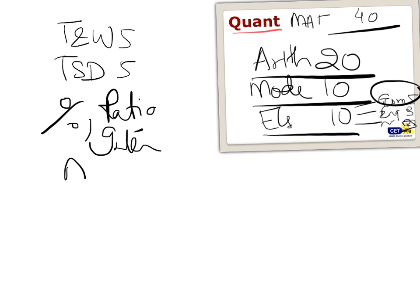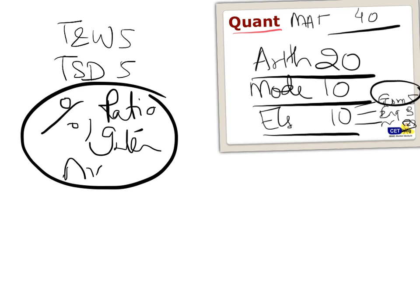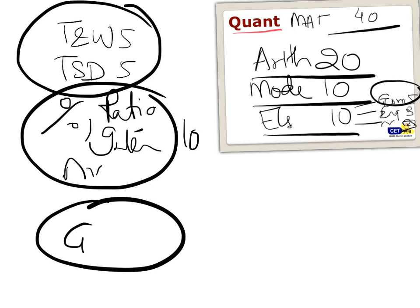Averages, mixtures - again 5-10 questions. Time and work, time speed distance you have to do, you have no other option. Then followed by percentages, ratios, interest, mixtures, allegations, averages combined - 10 questions. Geometry 5 questions. These are must-do chapters. If you don't have time, do at least 30 questions of each chapter and see all the formulas.